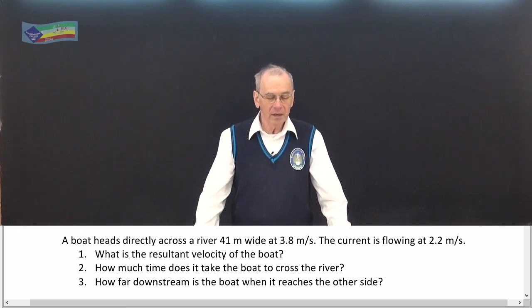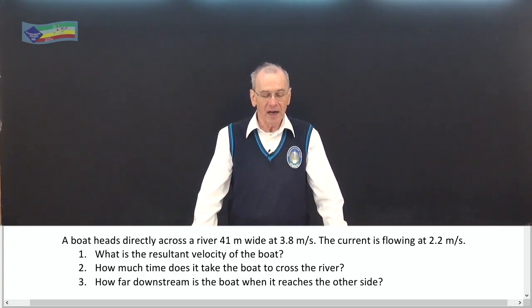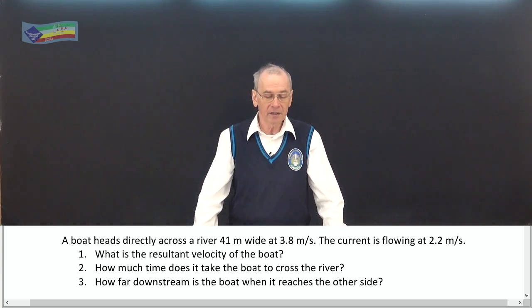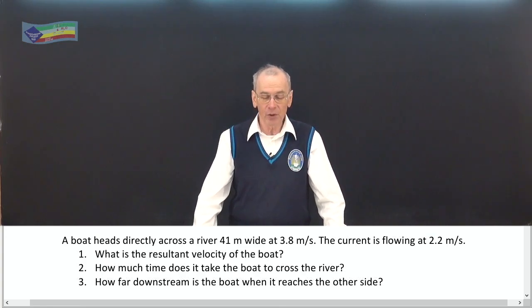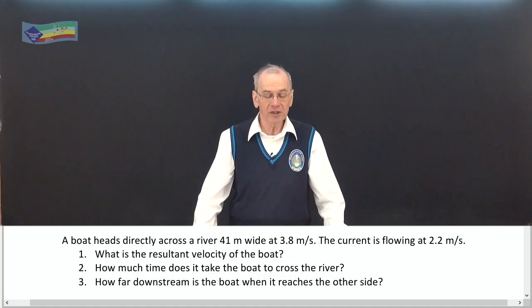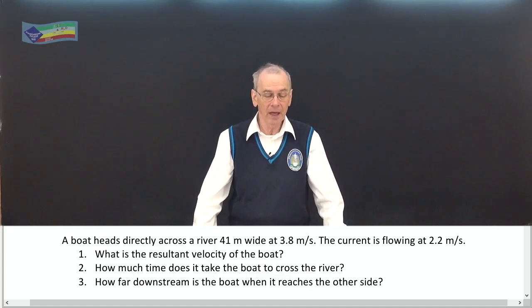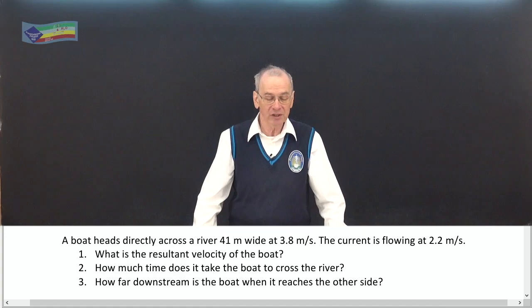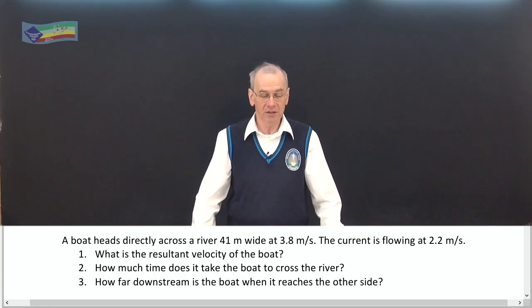A boat heads directly across a river 41 meters wide at 3.8 meters per second. The current is flowing at 2.2 meters per second. What is the resultant velocity of the boat? How much time does it take the boat to cross the river? And how far downstream is the boat when it reaches the other side?